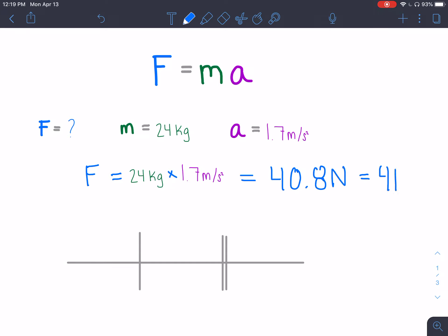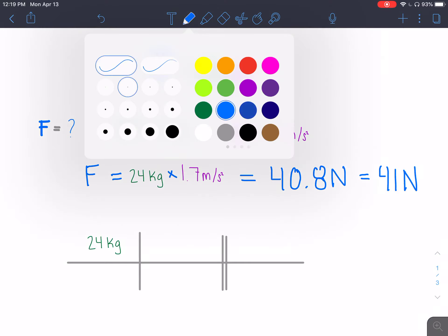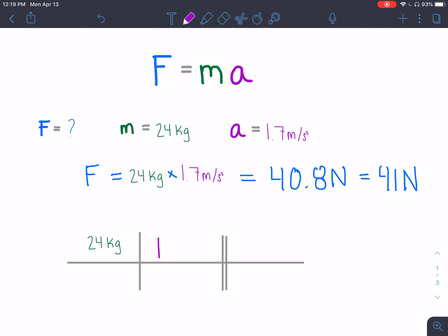And how that would look with dimensional analysis, we would have our mass times our acceleration, 7 meters per second squared.